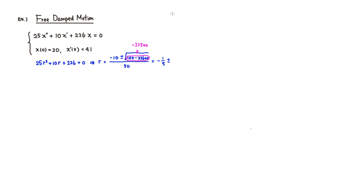So if you take the square root of that — taking 22,500: pull out a 10, leaving 2250, then factor as 225 times 10, and 225 = 5 × 45 = 5 × 5 × 9. So it's 3 times 5 times 10, giving 150. So we have 150i over 50, which is 3i, because 150 divided by 50 is 3.